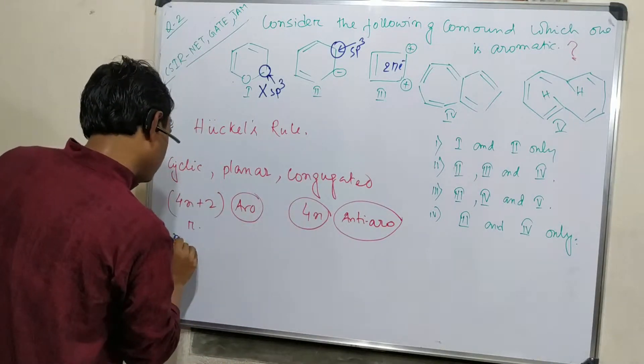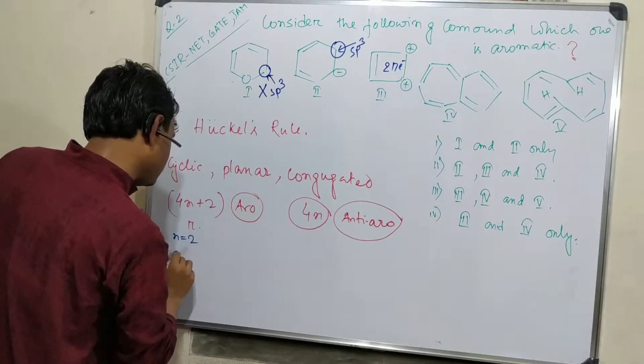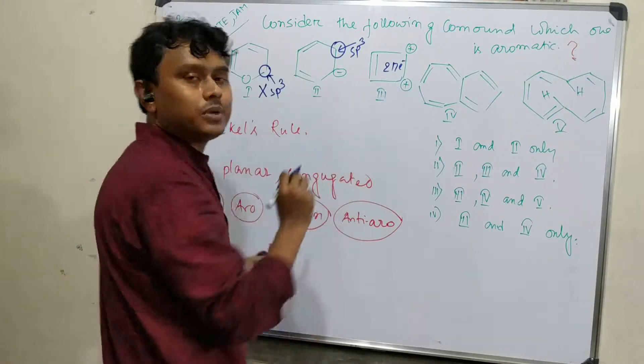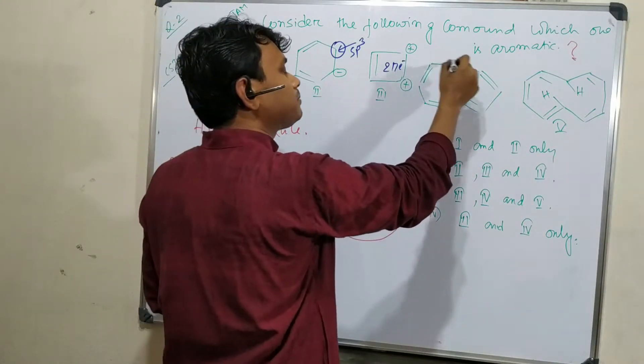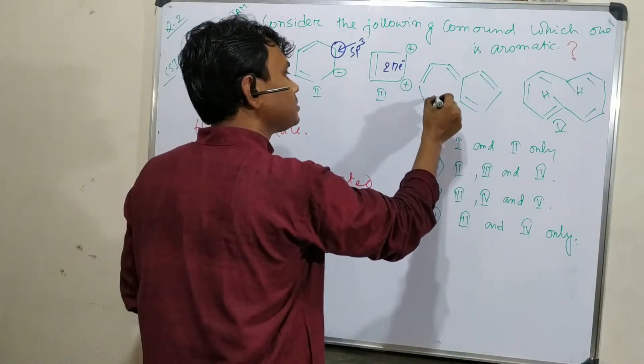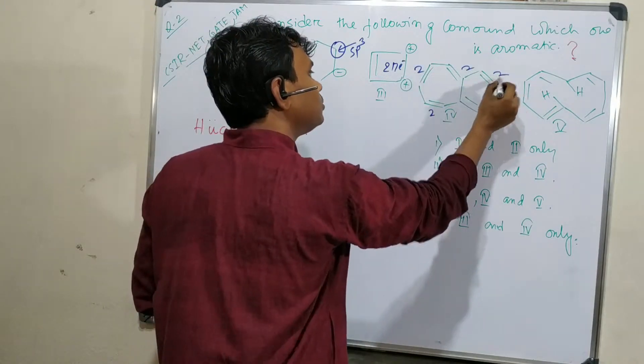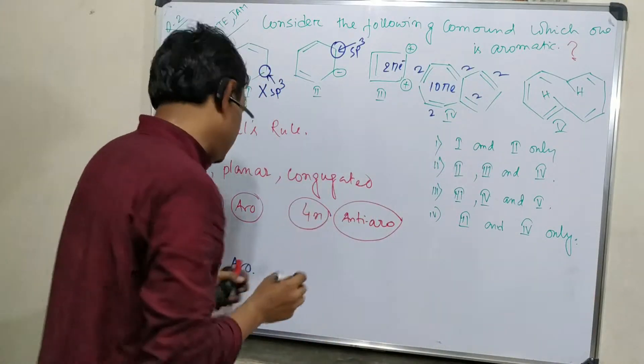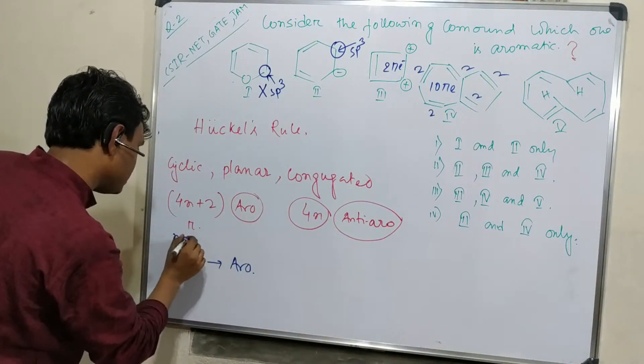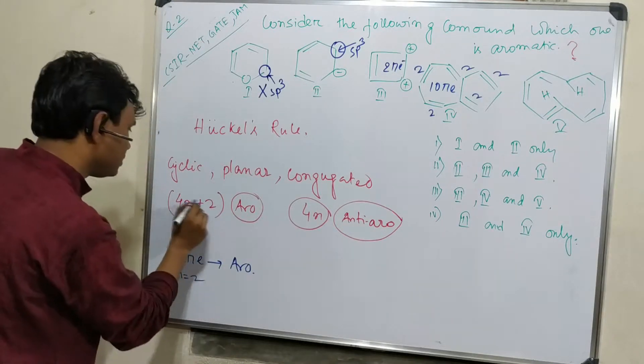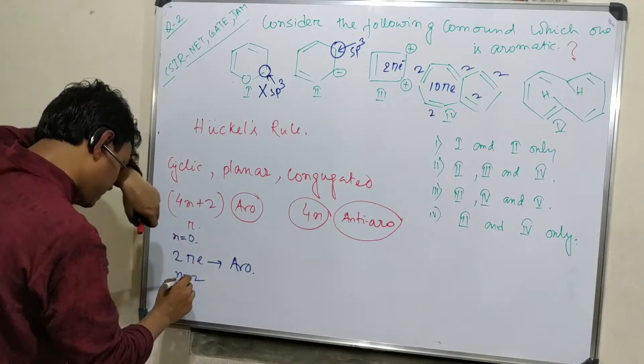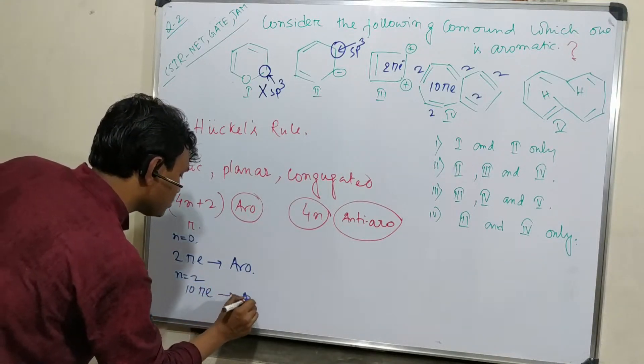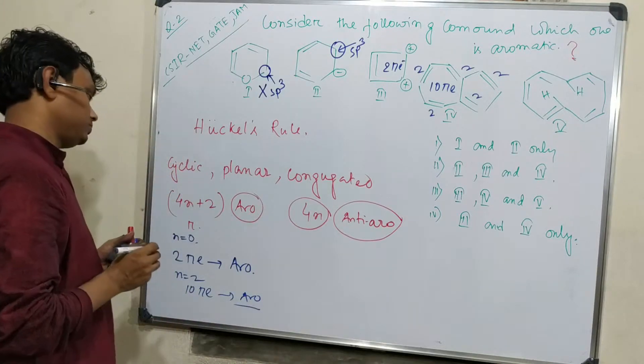This is cyclic, planar, conjugated and contains 2, 2, 2, 2, 2, 3, so 10 pi electrons. If n equals 2, then it will be 10 pi, so this is also aromatic.